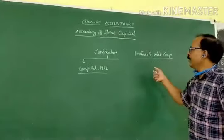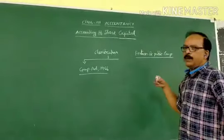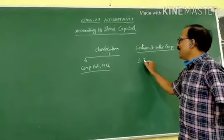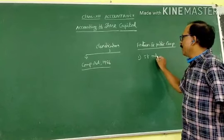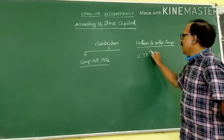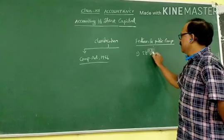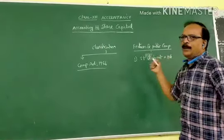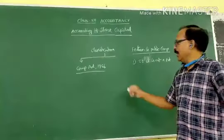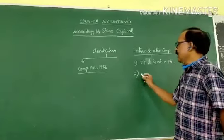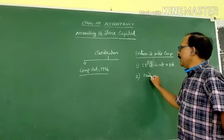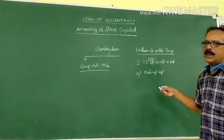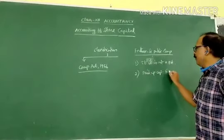These are the features of a public limited company. The first feature is: if a company is not a private limited company, then automatically it is a public limited company. The second feature is the minimum paid-up capital of a public limited company is a minimum of 5,000,000.